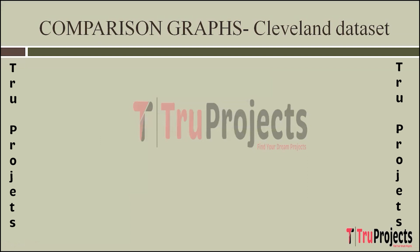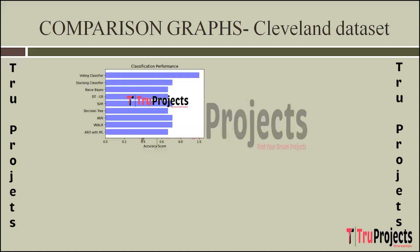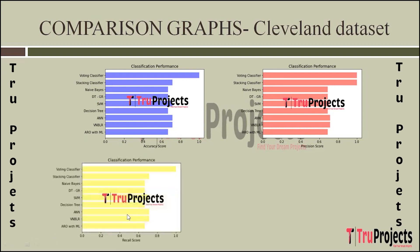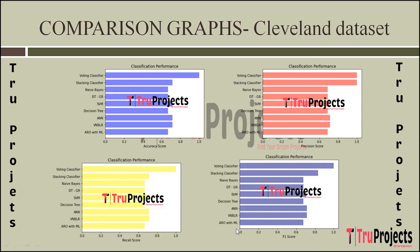Now we'll see the comparison graphs of the algorithms built using the Cleveland dataset. The horizontal bar graph compares accuracies of different algorithms — on the X-axis are accuracy scores and on the Y-axis are algorithm names. Accuracy measures the overall correctness of predictions. The precision scores comparison graph shows how many predicted positives were actually correct. The recall scores comparison graph shows how many actual positives were correctly predicted. The F1 scores comparison graph combines precision and recall into a single metric, balancing accuracy and completeness in predictions.